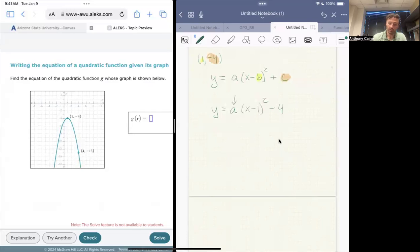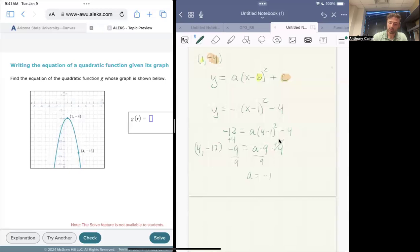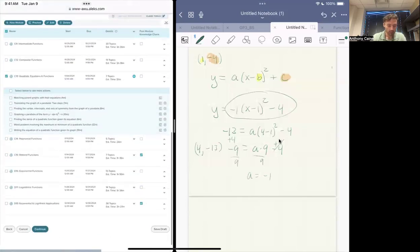In order to get this last value, we just use the other point given. The other point says that when x is four, y is minus 13. So I know that minus 13 is my y value. And that happens when x is four. So I'm putting four. And now I can solve for a. This is equal to a three squared is nine. So times nine minus four. Let's go ahead and add four. That goes away. And now we have plus four. That's negative nine. Then we divide by nine. We find out that a is negative one. Now we have our equation. This is a negative one. That is what I would type in that box.